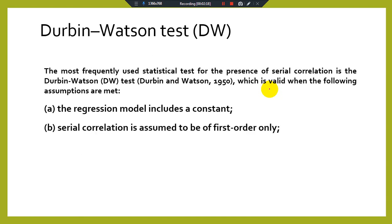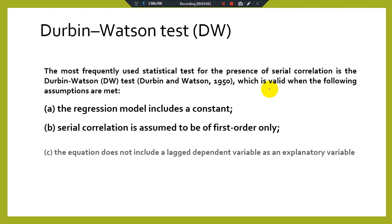Second, serial correlation is assumed to be first order only. First order means two consecutive observations are correlated. When non-consecutive observations are serially correlated, that is known as second order or higher order serial correlation. When two consecutive observations are correlated, this is known as first order serial correlation or autocorrelation.